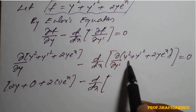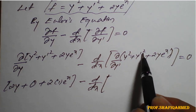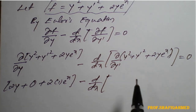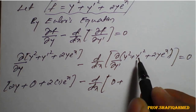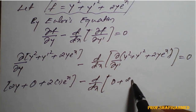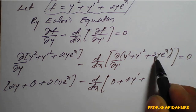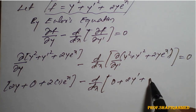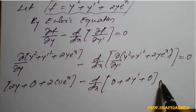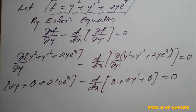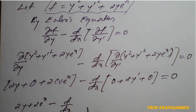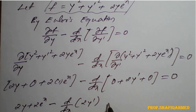Now we apply the partial derivative with respect to y-dash. y squared with respect to y-dash is 0; y-dash squared with respect to y-dash is 2y-dash; 2y and eˣ are constant with respect to y-dash, so that term is 0. After rearranging, we get: 2y plus 2eˣ minus d/dx of 2y-dash equals 0.